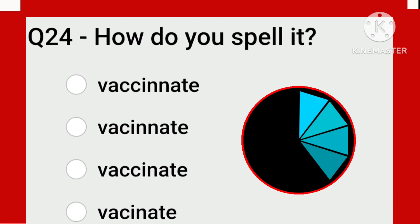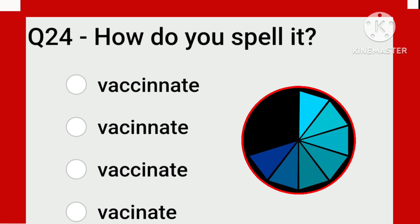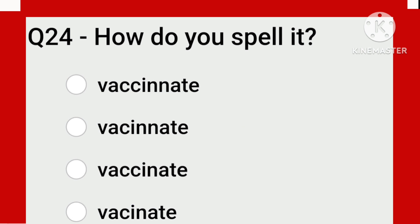Vaccinate or vaccination is also a very common word. Which is the correct spelling? The correct spelling is this one: V-A-C-C-I-N-A-T-E. Vaccinate.